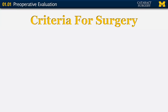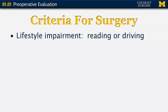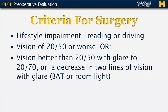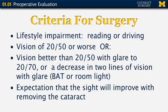There are several criteria for cataract surgery. The most important is that the patient has to express a lifestyle impairment — they have to describe a problem with reading or driving, something that impairs their daily activities. The insurance companies have their own set of criteria: 20/50 vision or worse, or if vision is better than 20/50, it has to glare to 20/70, or at the very least demonstrate a decrease of two lines of vision with glare testing. Then you have to have the expectation that the sight will improve by removing the cataract.